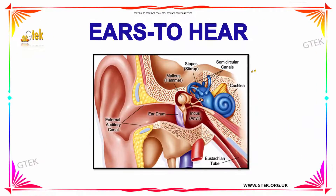First we are going to discuss about the structure of the Ear. The Ear has an external auditory canal, the eardrum, to which the three small bones — Malleus, Stapes, and Incus — are attached. Then we have the cochlea and semicircular canals.